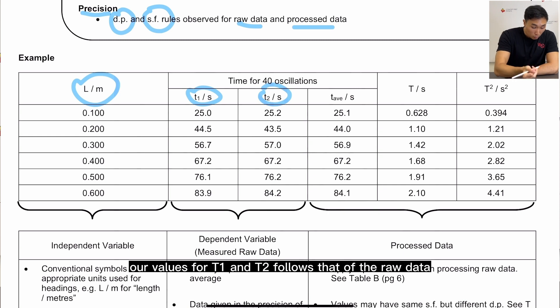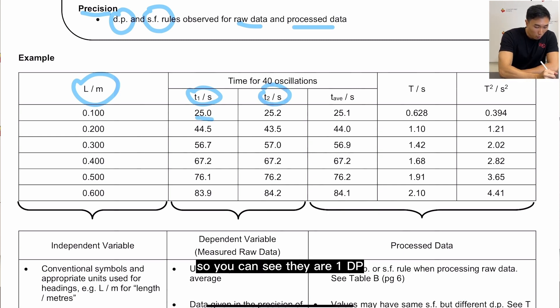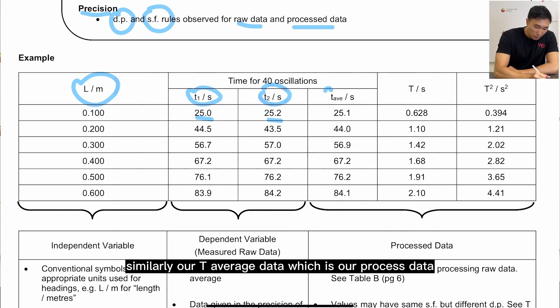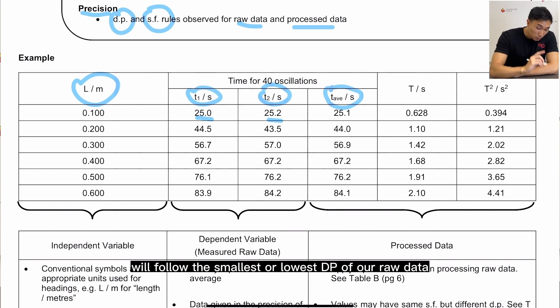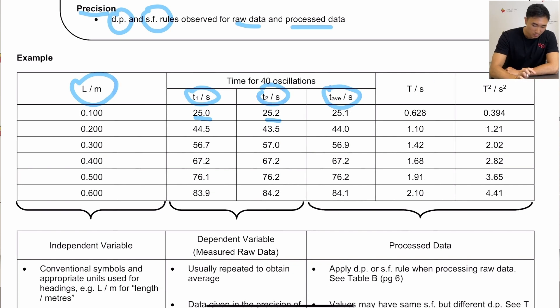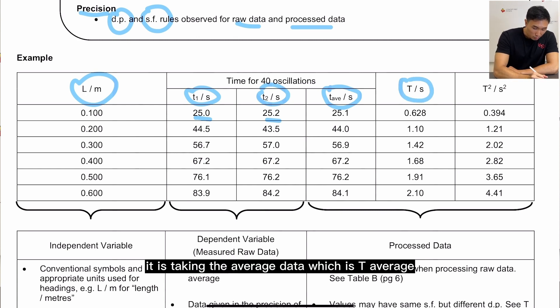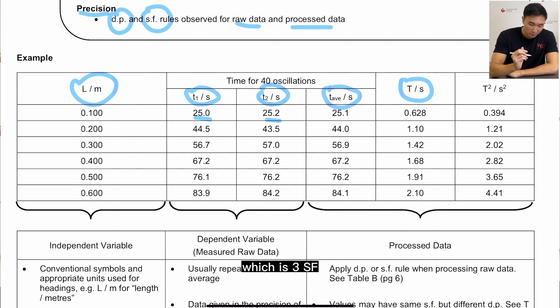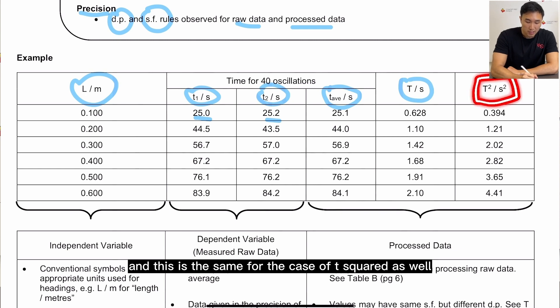What do I mean? Looking at the example table, our values for T1 and T2 follows that of the raw data. So you can see they are of 1 DP. Similarly, our T average data, which is our process data, will follow the smallest or lowest DP of our raw data. In this case 1 DP as well. Likewise for our period capital T, it is taking the average data which is T average, dividing by a fixed number, 40 oscillations, and obtaining this value. Now because it follows the lowest SF in our T average which is 3 SF, and this is the same for the case of T2 as well.